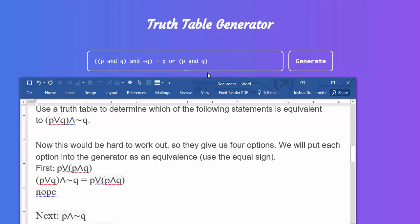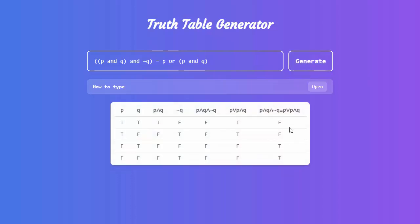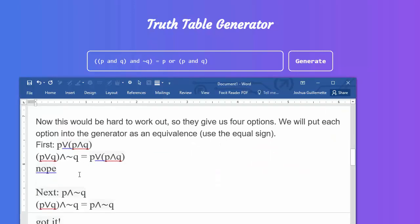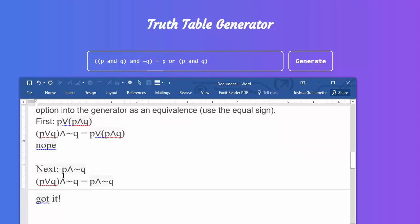So p ∨ (p ∧ q) has got to be equivalent to the original expression. I'm going to click generate. You can see two are false and two are true. So this is not an equivalence — for it to be an equivalence, they would all have to be true. So no.